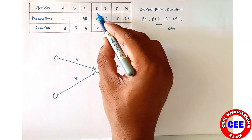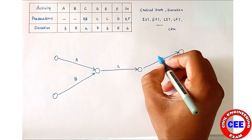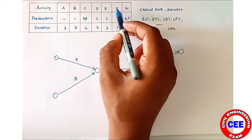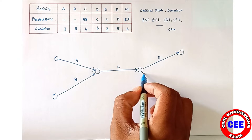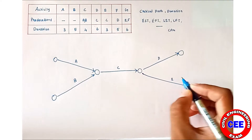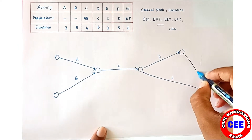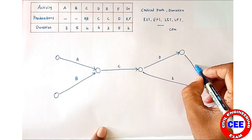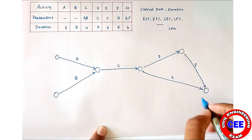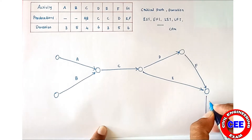Next, for D activity, C is the predecessor, so we draw D after C. For E activity, C is also the predecessor. For F activity, D is the predecessor. Finally, for G activity, E and F are the predecessor activities.